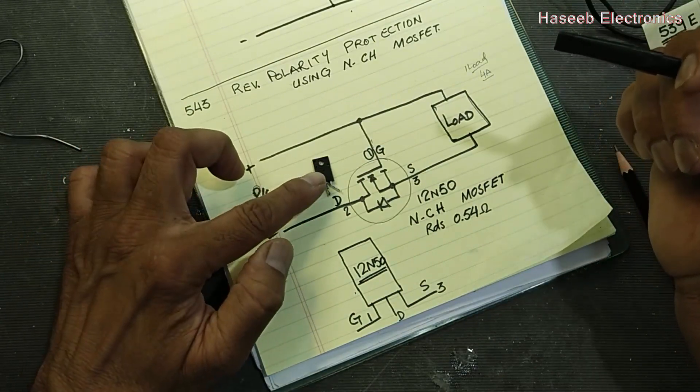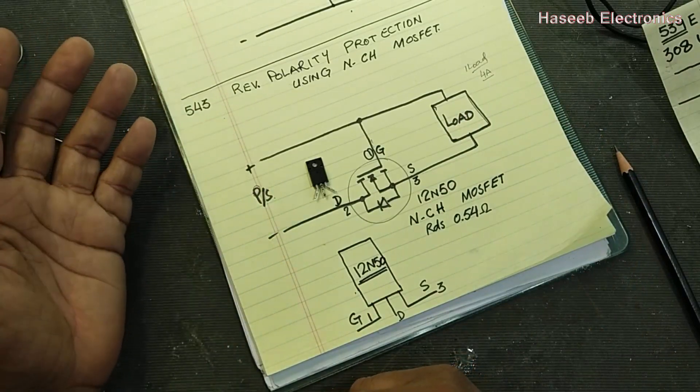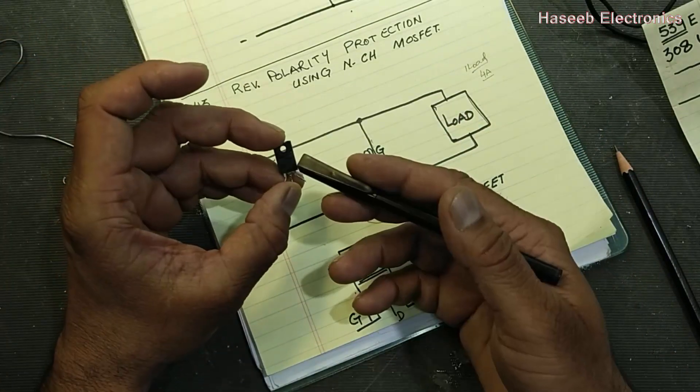For example, our supply is 12 volts, we can select 40 volt, 50 volt. This MOSFET I did not purchase from market, I removed it from a power supply.